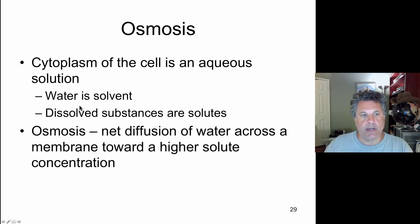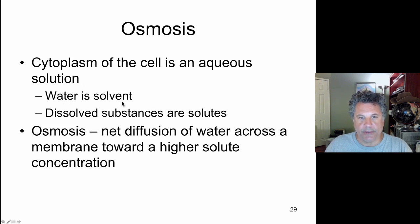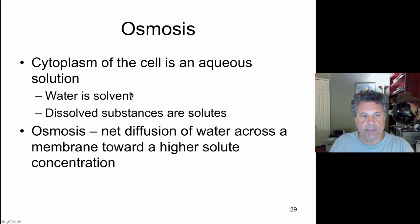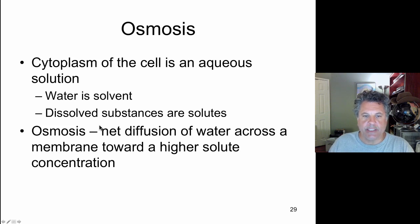Because cells exist in an aqueous solution environment and their cytoplasm is an aqueous solution, water is referred to as the solvent and the dissolved substances are the solutes. That's true for external cellular environments but also the cytoplasm as well. Osmosis is a diffusion of water across a membrane that is permeable to water toward a higher solute concentration.